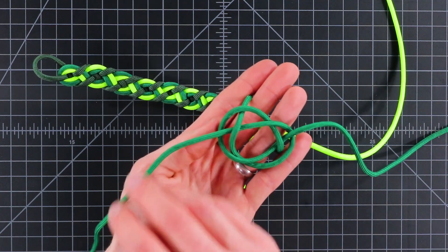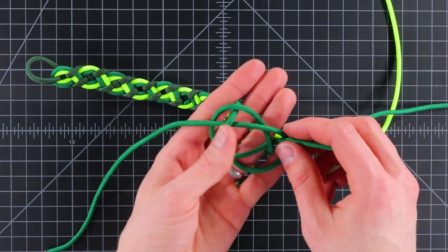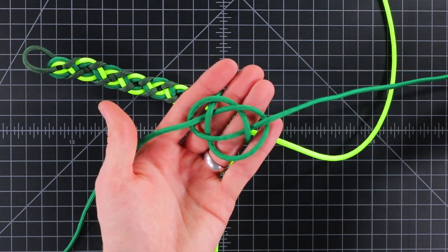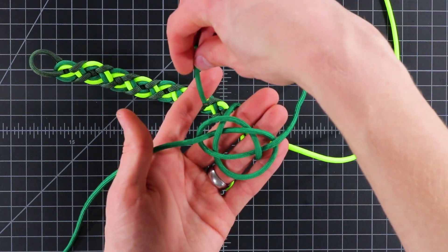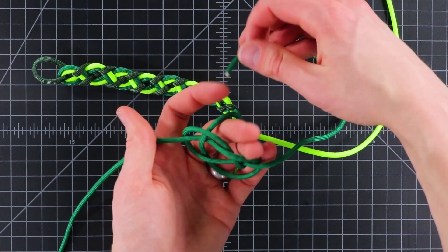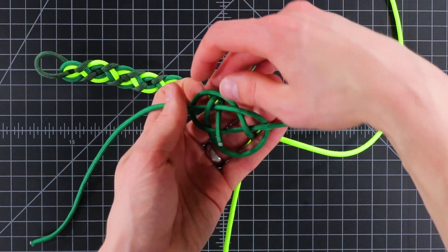We're going to be turning this into our diamond knot. Take this cord and go around this cord between your pointer and middle. And then right up through the middle of the knot.